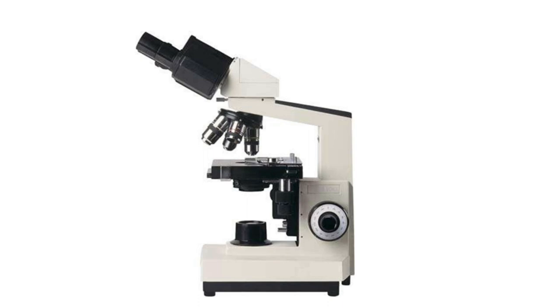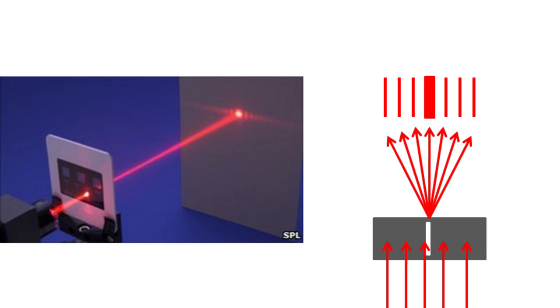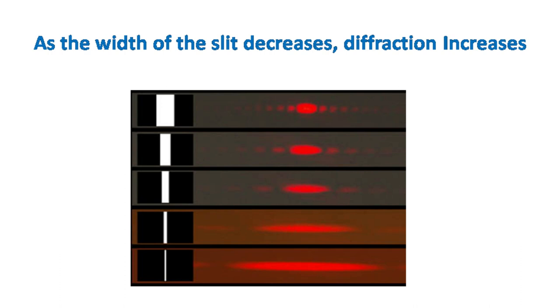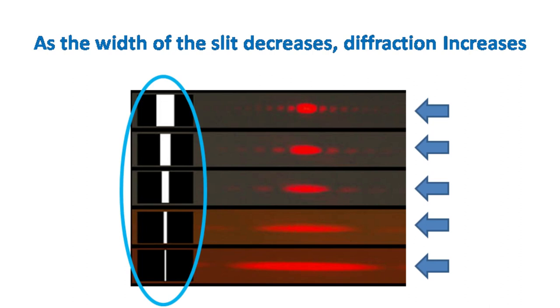If light is passed through a small slit, it gets diffracted. The diffraction results in the formation of dark and bright spots. It should be noted that as the width of the slit decreases, diffraction of light increases.